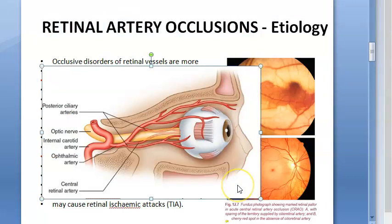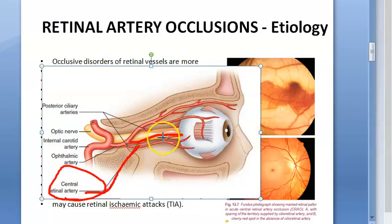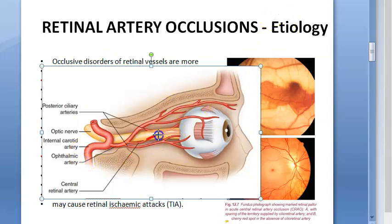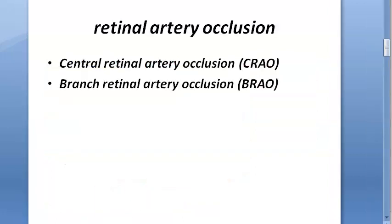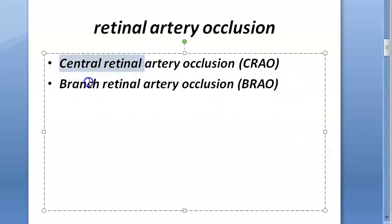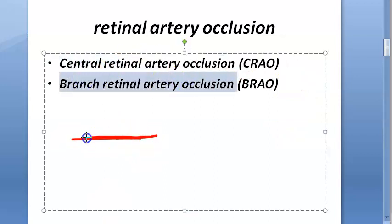The central retinal artery is located in the middle of the optic nerve. This artery brings blood from the ophthalmic artery, which comes from the internal carotid artery. When this artery gets occluded, blood supply to the retina is cut off. The occlusion can affect the central retinal artery or even branch retinal arteries.